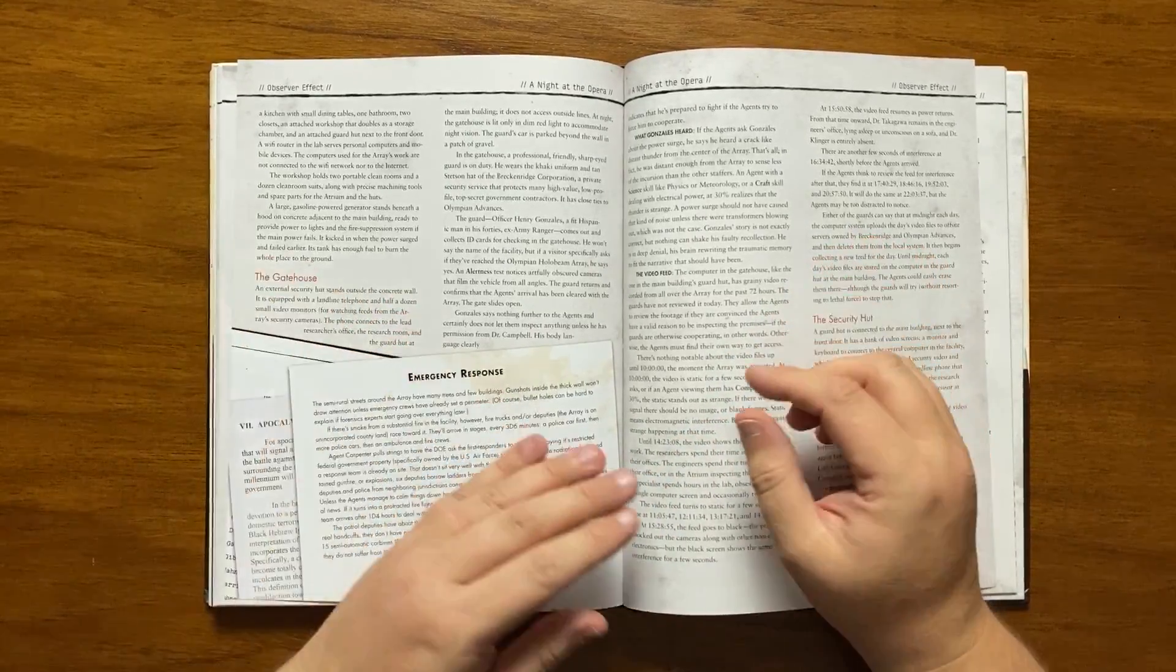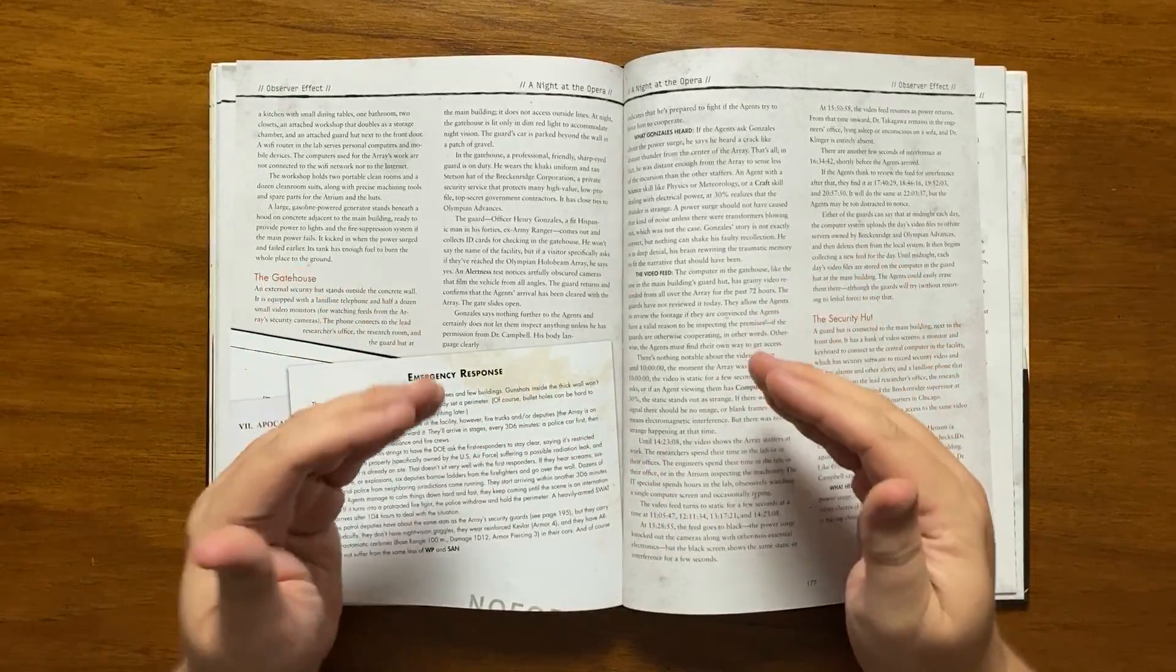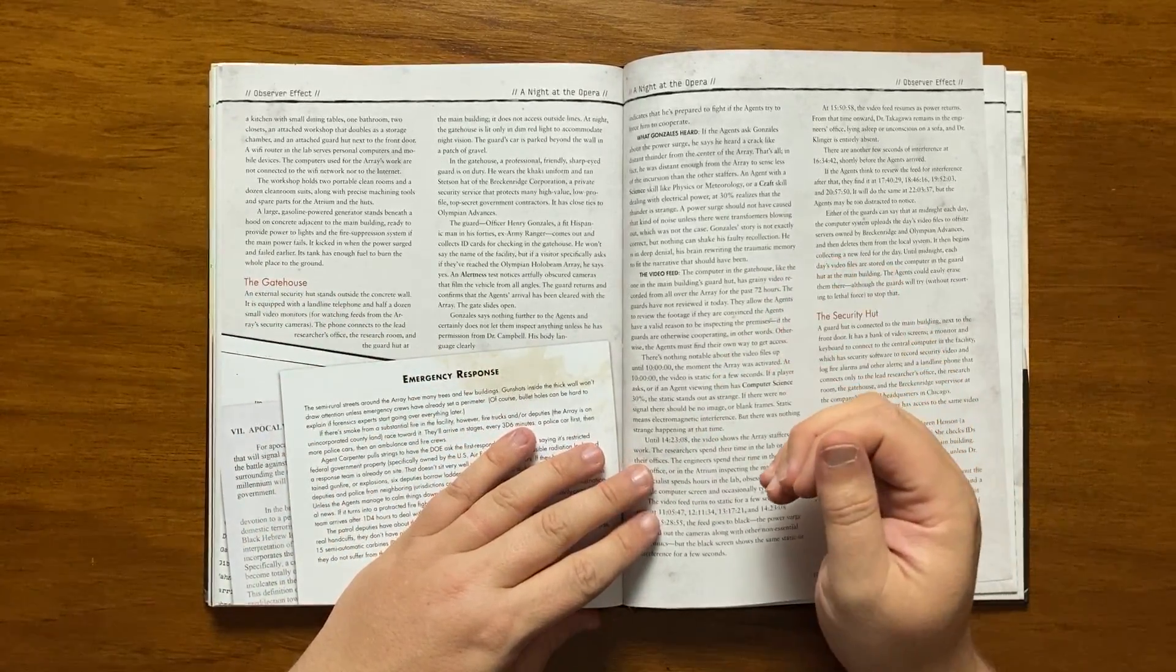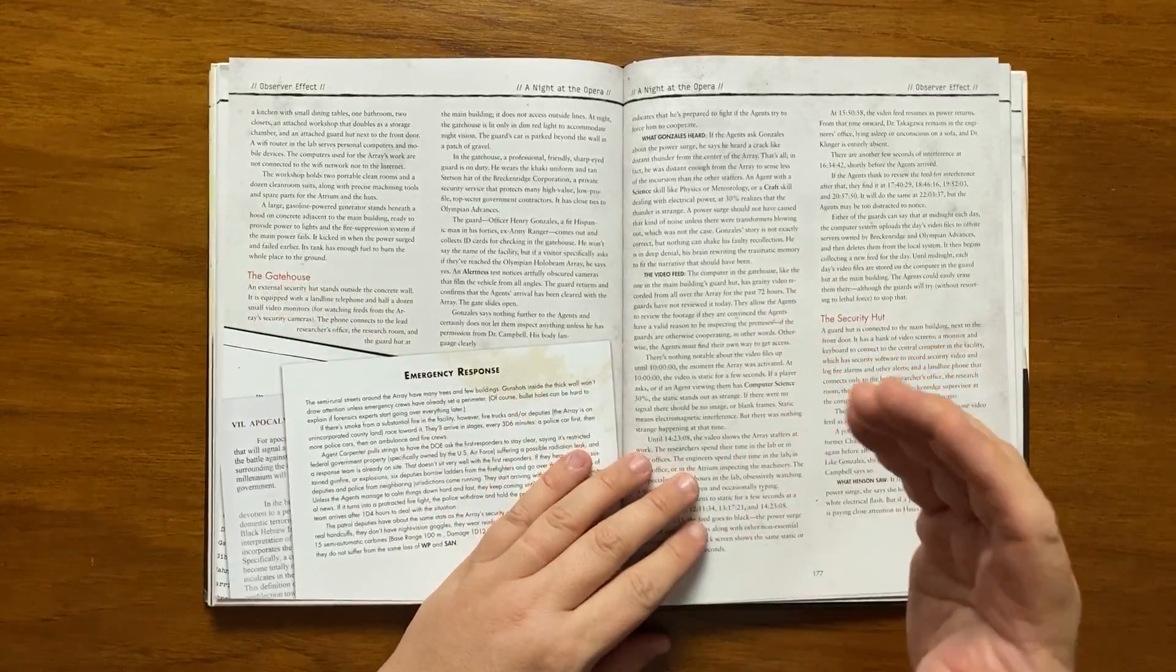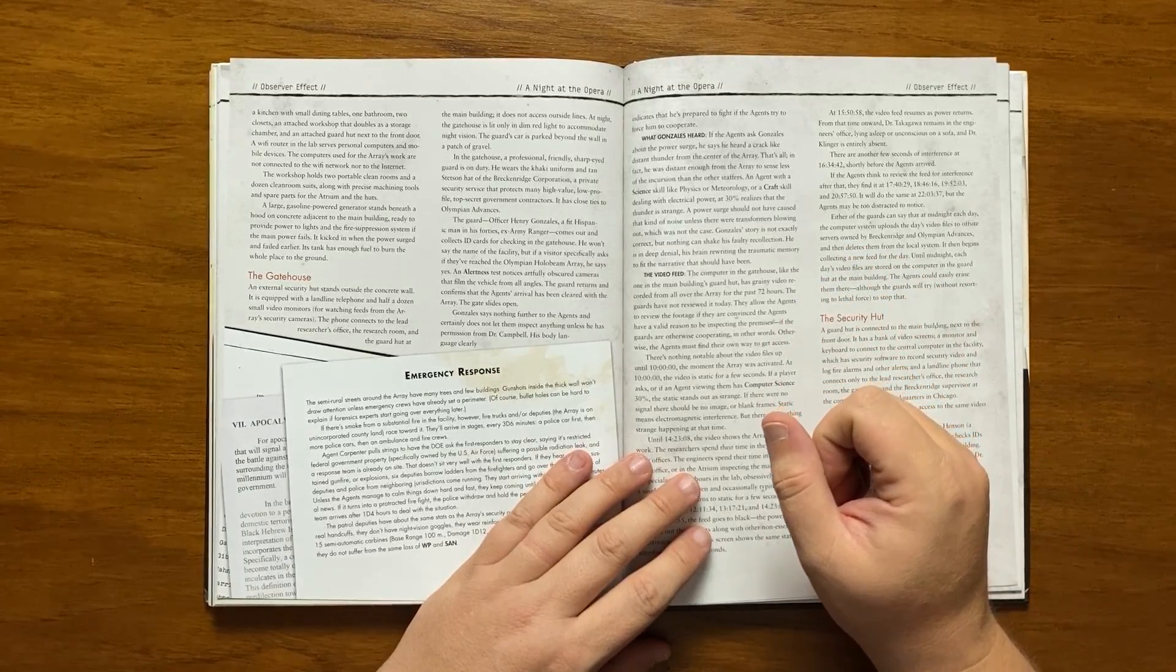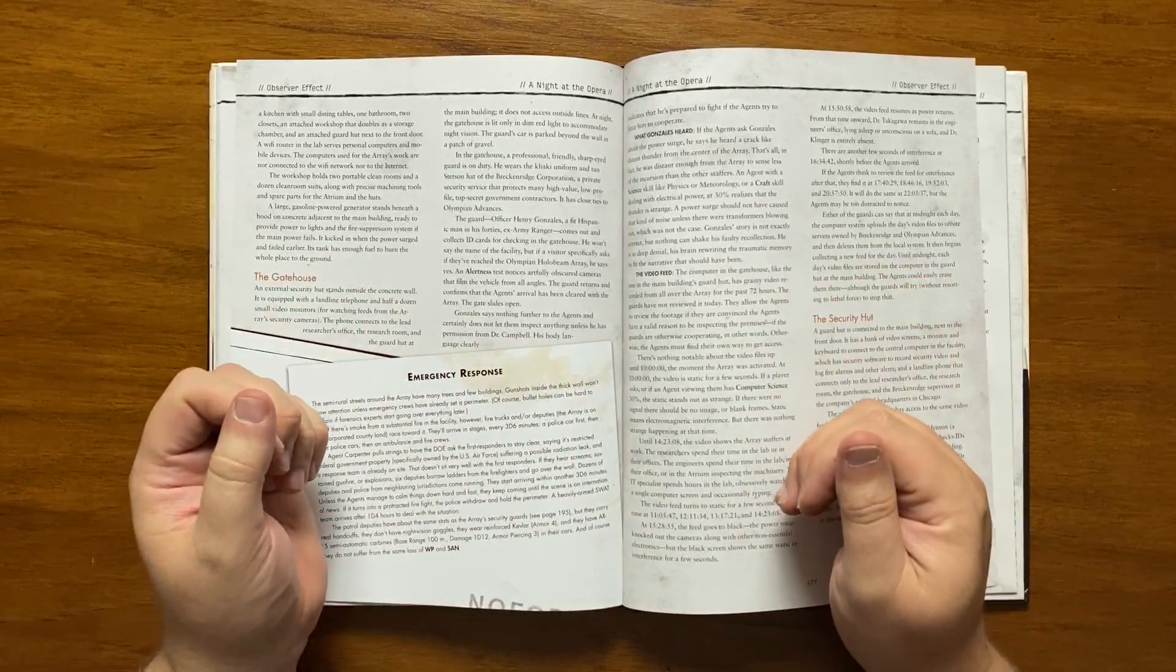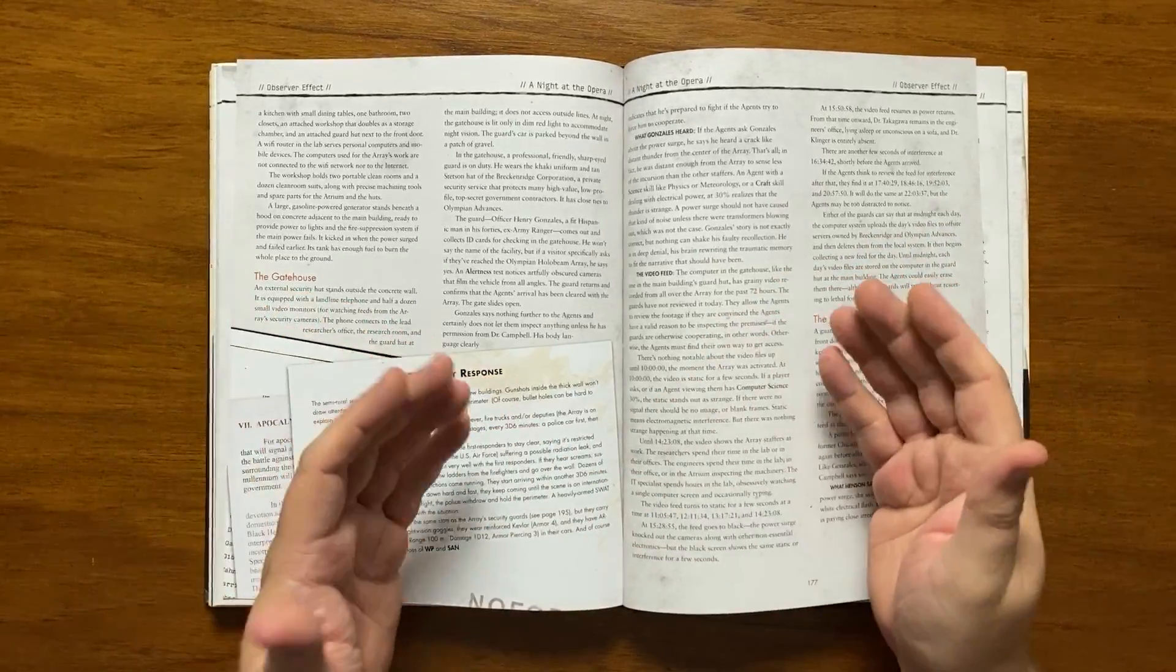There is also an external security hut equipped with a landline and video monitors connected to the Array's cameras. The officer on duty is Henry Gonzalez, an ex-army ranger in his 40s who is sharp, professional and wears a Stetson hat from the Breckenridge Corporation, a private security firm that has connections to Olympian advances. As they arrive he would collect their ID cards for checking and would disappear then return saying that they have clearance for the Array. His body language indicates he is willing and capable to do whatever is required for his job. If he is asked about the power surge he will say he heard a crack like distant thunder but that is all. His brain is in denial about the traumatic memory so his recollections are a safety mechanism.